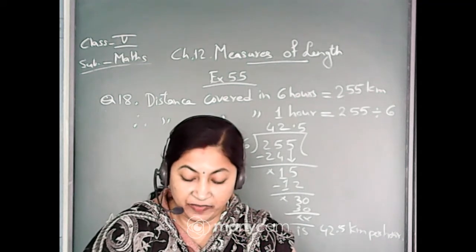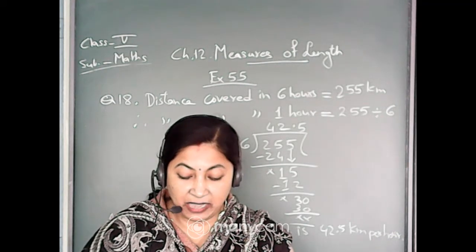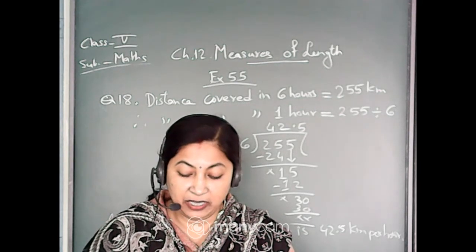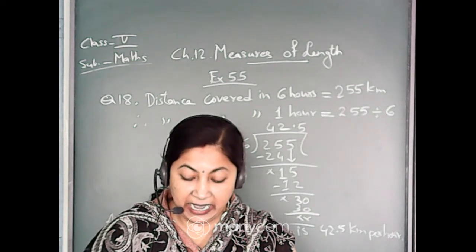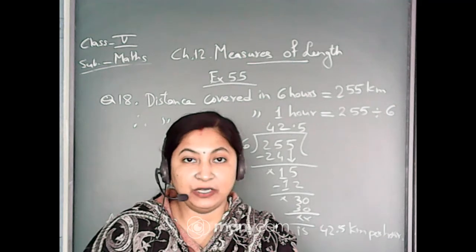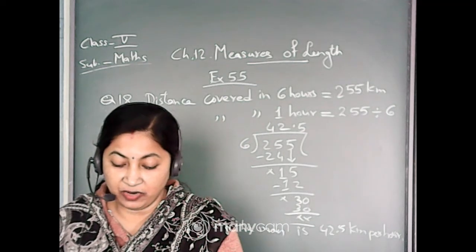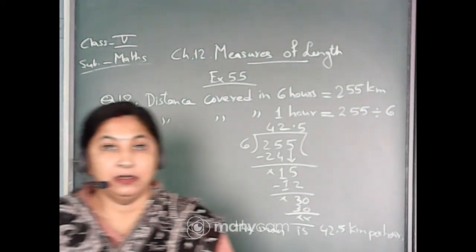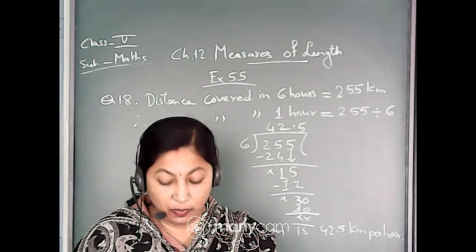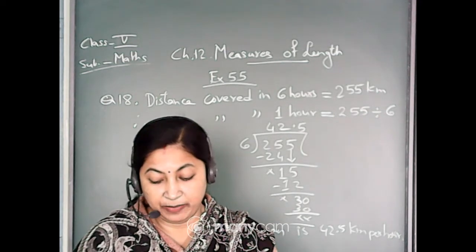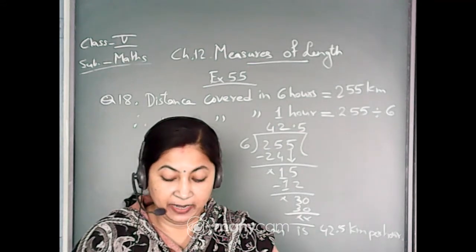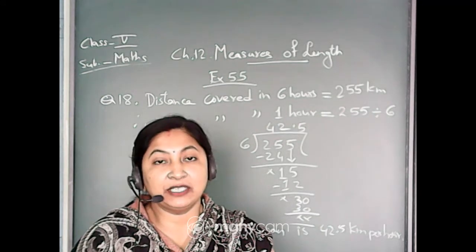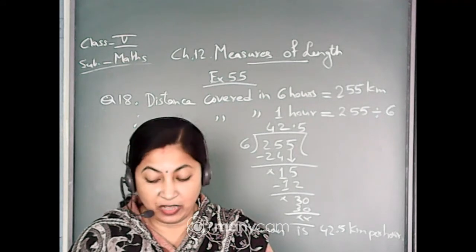Tick the correct answer. 12 hectometer and 8 decameter is equal to dash meter — you have to convert into meter. Now how will you convert it? Just remember: starting from kilometer, then hectometer, then decameter, then meter. So 1 hectometer is equal to 100 meter, and 1 decameter is equal to 10 meter. So this is how you will solve.